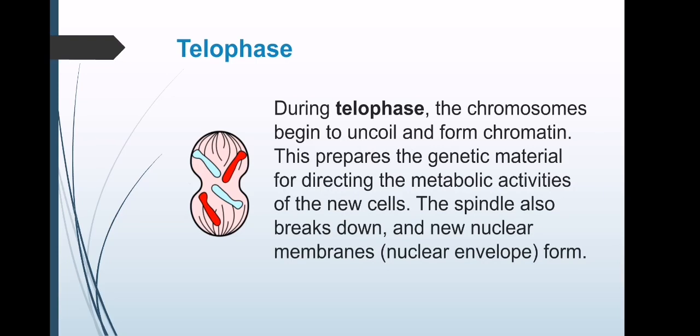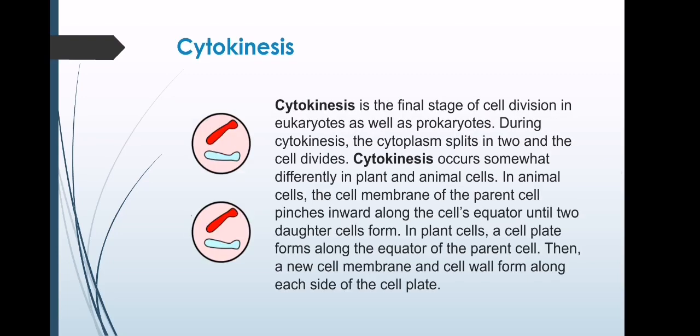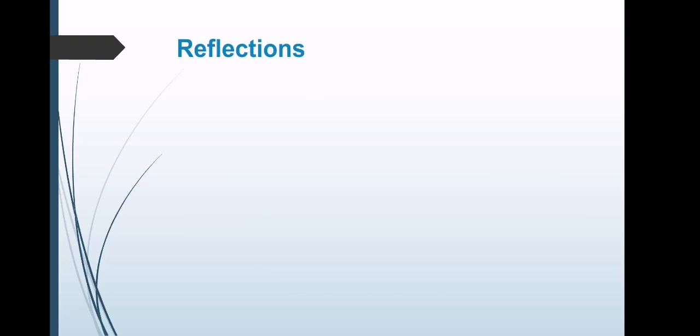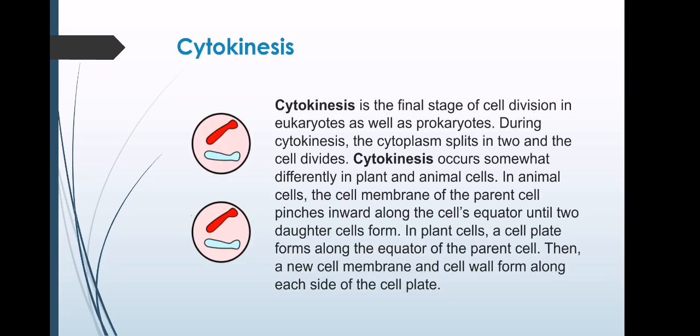Cytokinesis: The spindle fibers not attached to chromosomes begin breaking down until only that portion of overlap is left. It is in this region that a contractile ring cleaves the cell into two daughter cells. Microtubules then reorganize into a new cytoskeleton for the return to interphase.